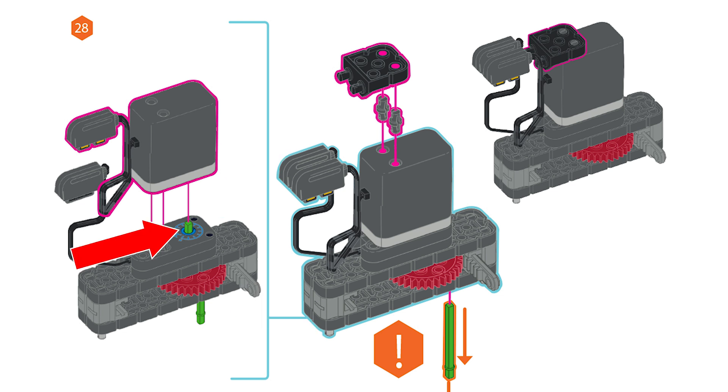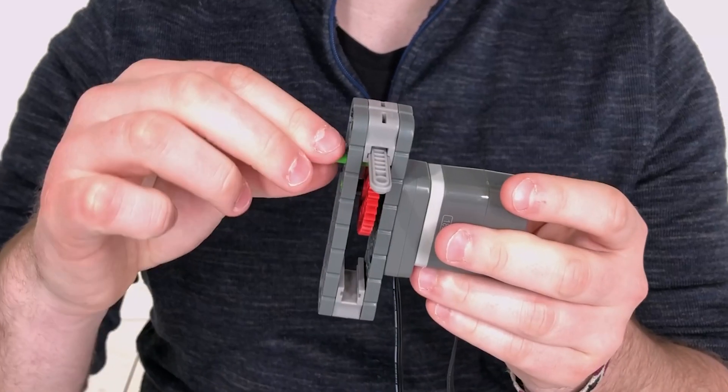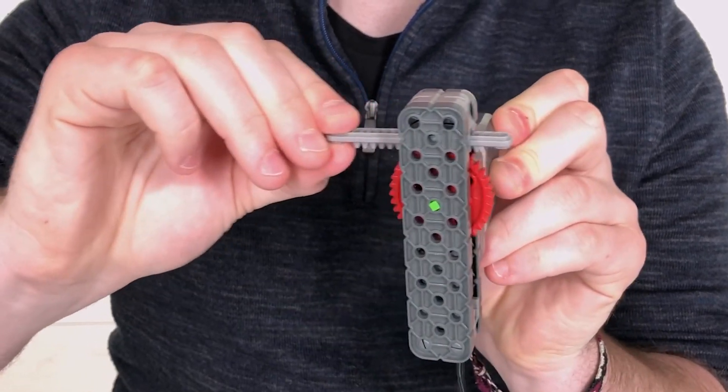You are now free to remove the second green shaft, allowing the mechanism to move. You'll know if you were successful if you feel the resistance of the motor when sliding the gray rack gear back and forth.